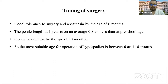Timing of surgery: there is good tolerance of surgery and anesthesia by the age of six months. Penile length at the age of one year is around 0.8 cm less than the preschool age. Genital awareness occurs by the age of 18 months. So the most suitable age for operation of hypospadias is 6 to 18 months.